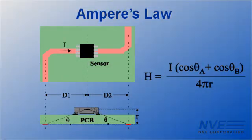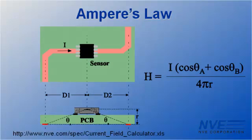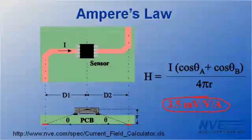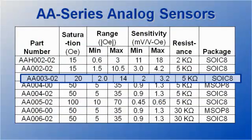The magnetic field over a trace can be calculated using Ampere's law. We also have a spreadsheet on our website to do the calculations. The demonstration configuration had a sensitivity of approximately 3.5 millivolts per volt per amp. The demo used an AA003-02E sensor, which has a medium sensitivity of about 2.5 millivolts per volt per ERSTED.